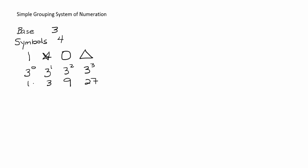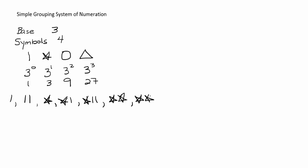In a simple grouping system, we can use the first symbol to represent any number up to 1 less than the next symbol. So we can mark two 1s for the number 2. Then the next number jumps up to 3, so we use a star. For 4 we have a star and one more; for 5, a star and two more; for 6, two stars; for 7, two stars and one more.